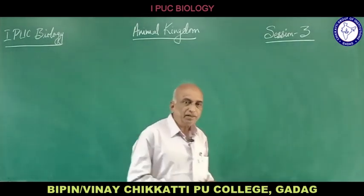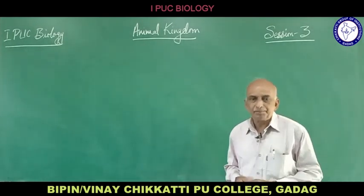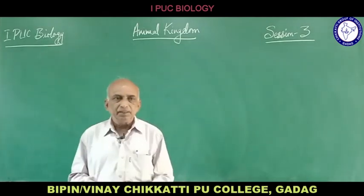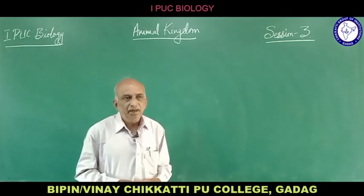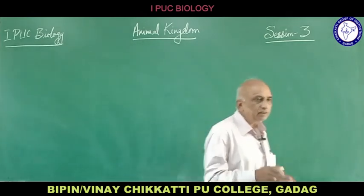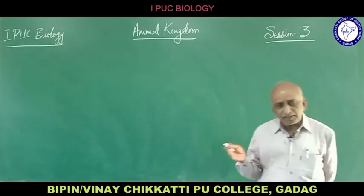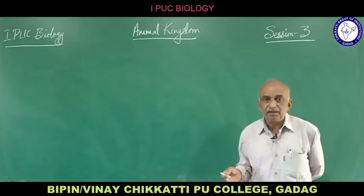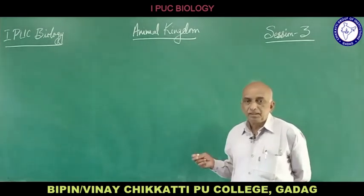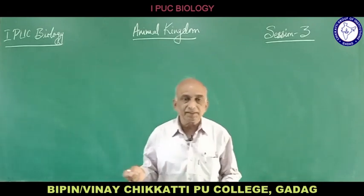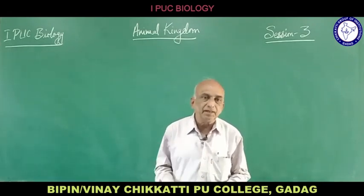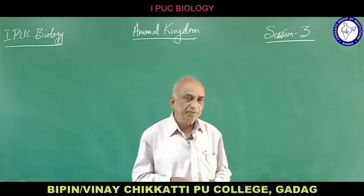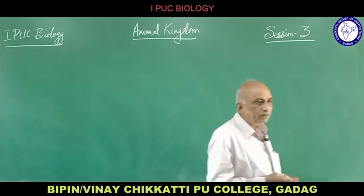These are the different phyla which we have come across. In each phylum there is a distinguishing character, however there are certain common characters among the different phyla — for example, bilateral symmetry, radial symmetry, diploblastic or triploblastic organization, hermaphroditism, and internal or external fertilization.